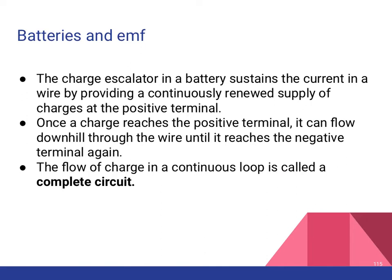Batteries create this charge escalator, and that's what gives us our current — the flow of electrons, or in the conventional case, the flow of positive charge. It does that by providing a continuously renewed supply of charges. Once the charge reaches the positive terminal, it flows down through the wire until it reaches the negative terminal and completes the circuit. We call that a complete circuit because it's one continuous loop. A complete circuit is made when there is one path for those electrons or positive charges to go with that battery.